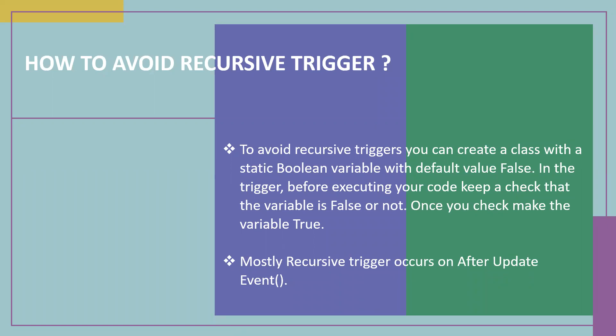To avoid a recursive trigger, you can create a class with a static boolean variable with the default value of false. In the trigger, before executing your code, keep a check that the variable is false or not. Once you check, make the variable true. Recursive triggers mostly occur on the after update event, though before insert and before update may also be affected.